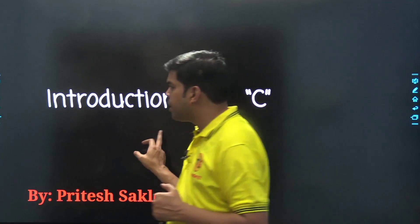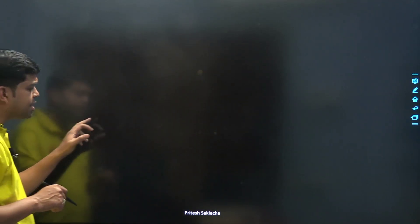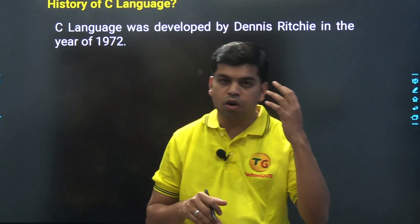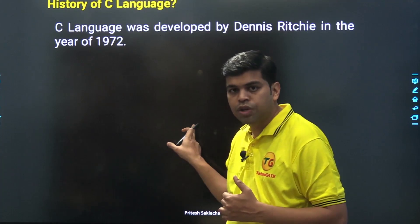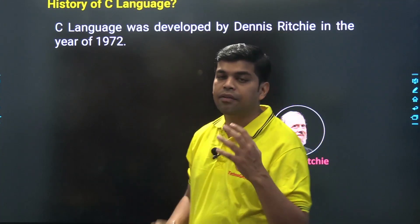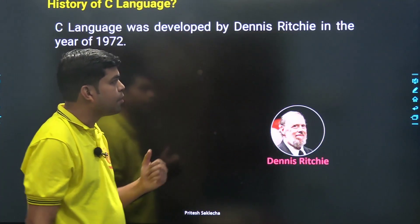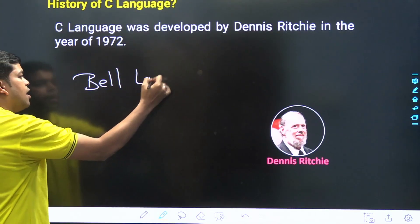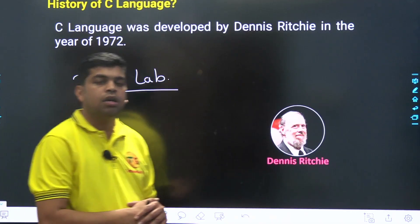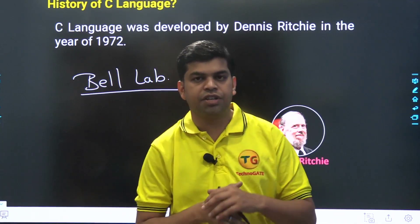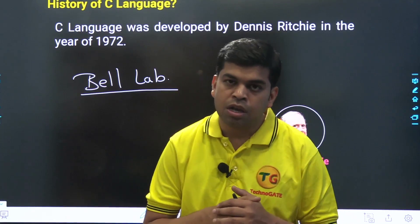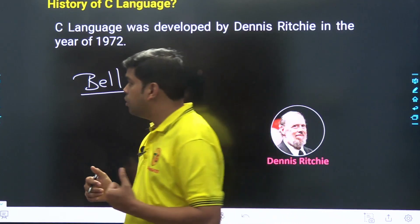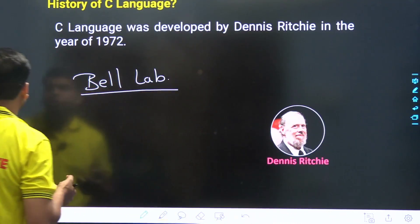First of all, we understand what is the history of C. C was developed by the scientist Dennis Ritchie in 1972. He is one of the persons who developed the C programming language in the Bell Laboratory of the US. The person Dennis Ritchie is also called the father of C or father of Unix.